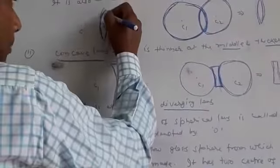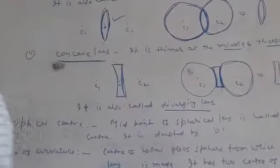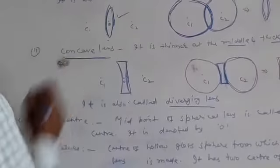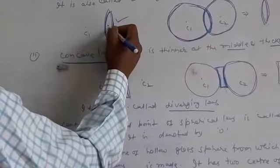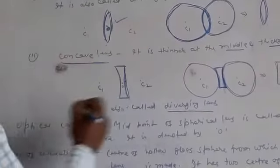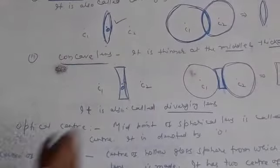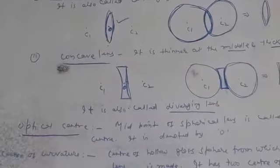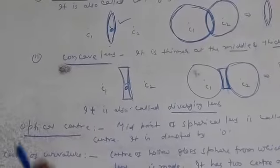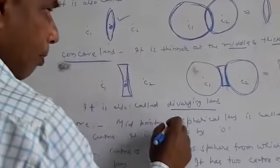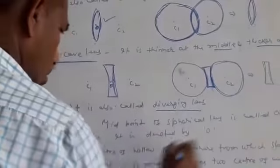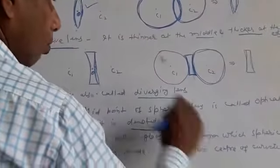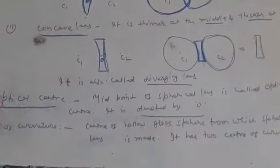So after the types of lens, one term is here that is known as optical center. You are seeing both the figures. It is the midpoint that is O. It is the midpoint of spherical lens. This definition is common for both lenses, concave as well as convex. Midpoint of spherical lens is called optical center. It is denoted by O, O for optical center.